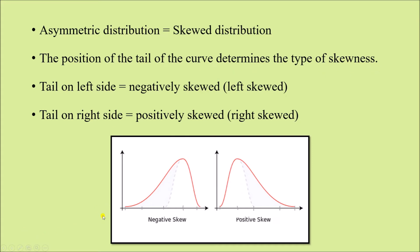In the first curve, on the left-hand side, you can see the tail is on the left side — that is why this is known as left-skewed distribution. On the other hand, in the second curve, since the tail is on the right side, this is right-skewed distribution.